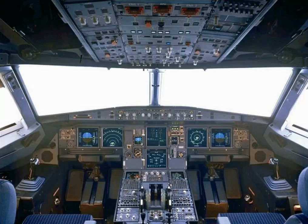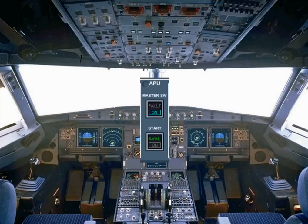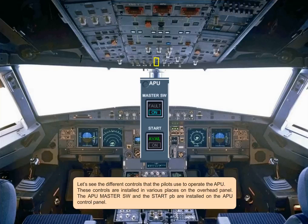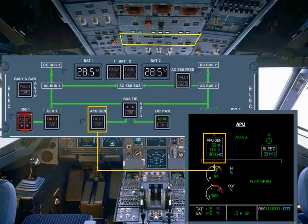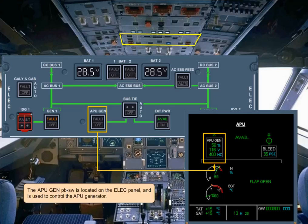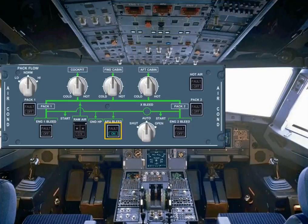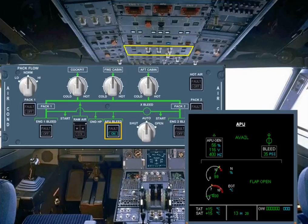Let's see the different controls that the pilots use to operate the APU. These controls are installed in various places on the overhead panel. The APU master switch and the start push button are installed on the APU control panel. The APU GEN push button switch is located on the electrical panel and is used to control the APU generator. The APU bleed push button switch is located on the air conditioning panel and controls the APU bleed system.